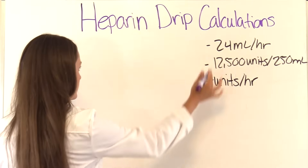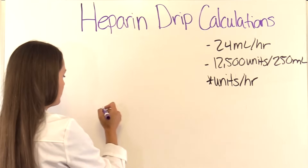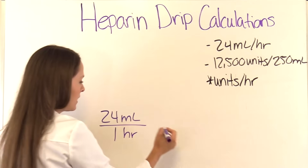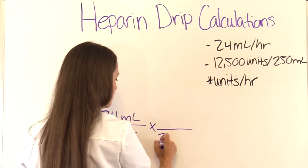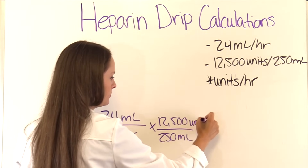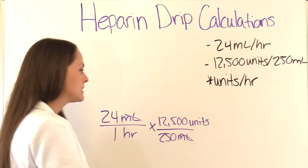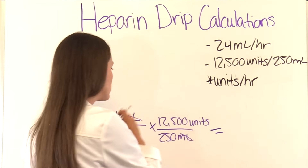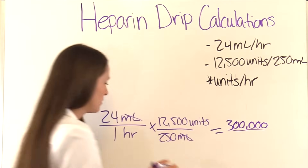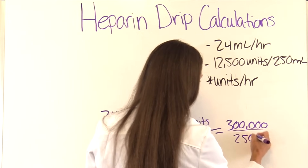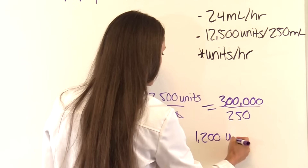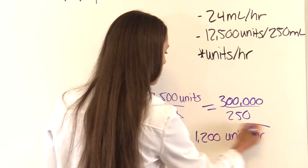Setting up with dimensional analysis, we start with the rate the pump is running: 24 milliliters over one hour. We're trying to get units per hour. On hand, our bag is 250 mls containing 12,500 units. Milliliters cancels out, leaving units per hour. Multiplying: 24 × 12,500 = 300,000, and 1 × 250 = 250. Then 300,000 ÷ 250 = 1,200. So 1,200 units per hour is what is infusing into this patient.